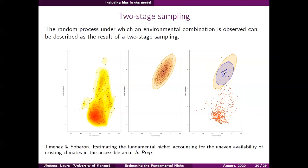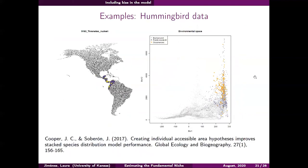When using only presence points without accounting for the shape of M, the estimated ellipsoid is smaller than the original fundamental niche and the centers differ. So not only is the estimated set smaller, but any test of the abundance-center hypothesis will yield different patterns compared to using the true center of the fundamental niche.